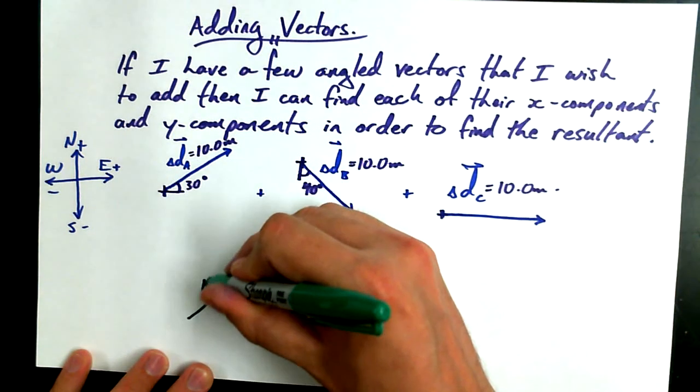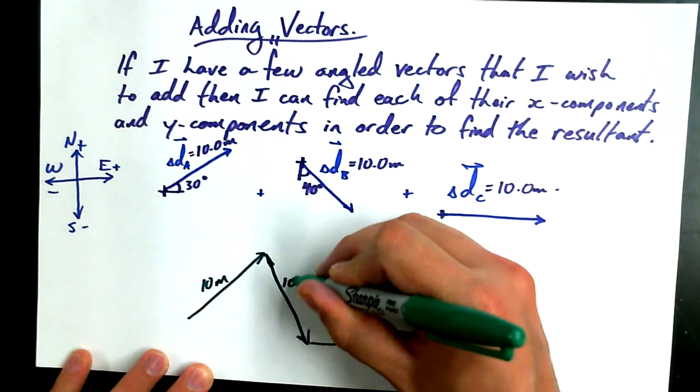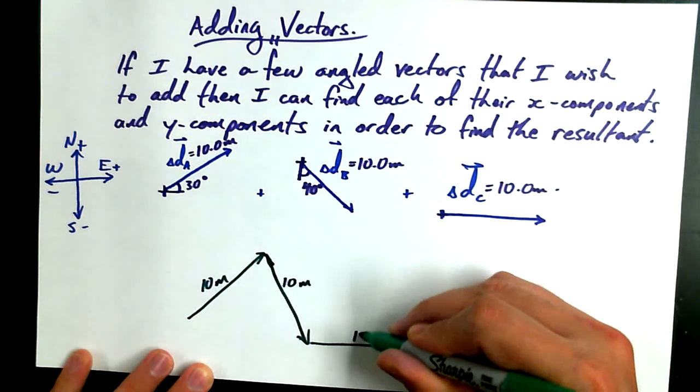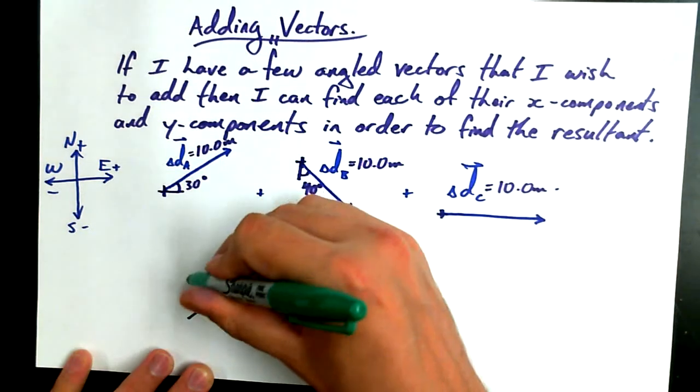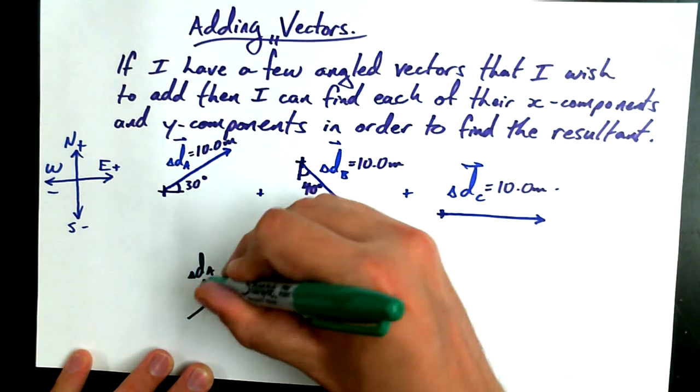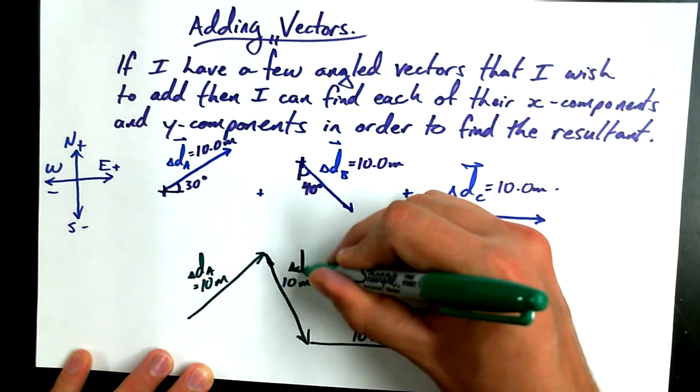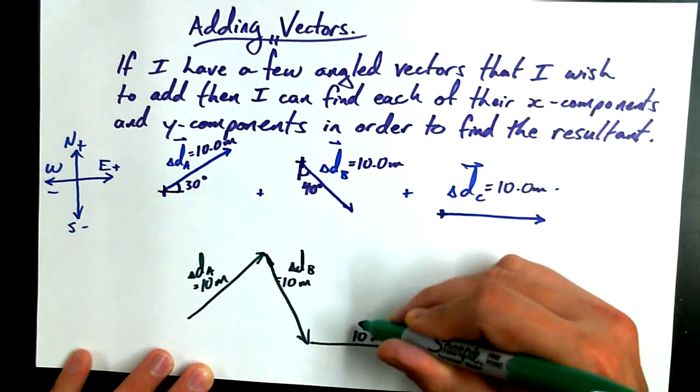Okay? 10 meters, 10 meters, and 10 meters. And this is delta DA, delta DB, and delta DC.